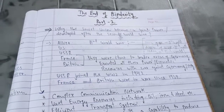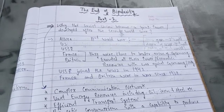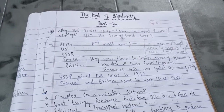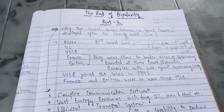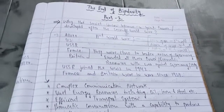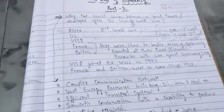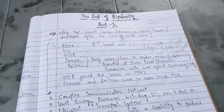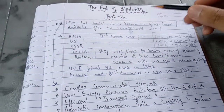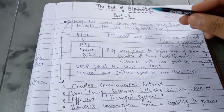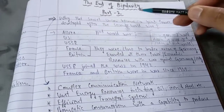Good morning to all students of political science. In the last video we started our second chapter, 'The End of Bipolarity,' and completed the first part. Now I will start the second part, but first a quick revision. We were studying the structure of the USSR. Bipolarity here means the disintegration of the USSR, but before studying the disintegration we need to know how it was formed.